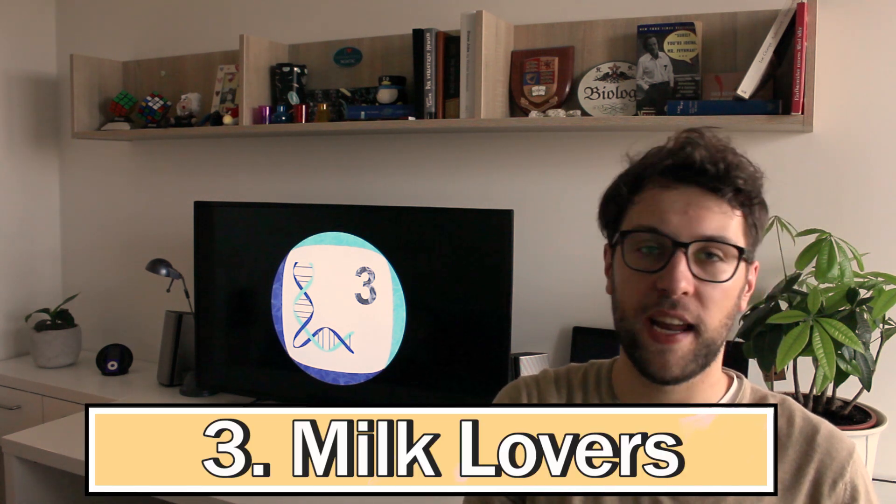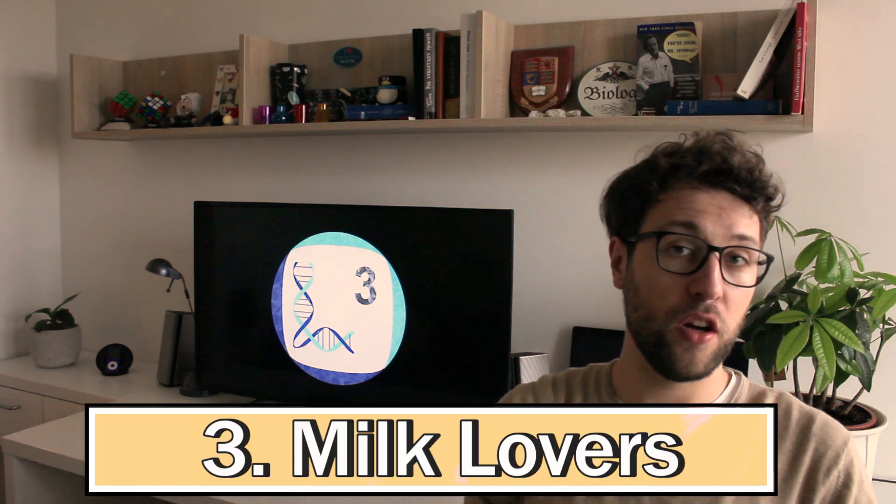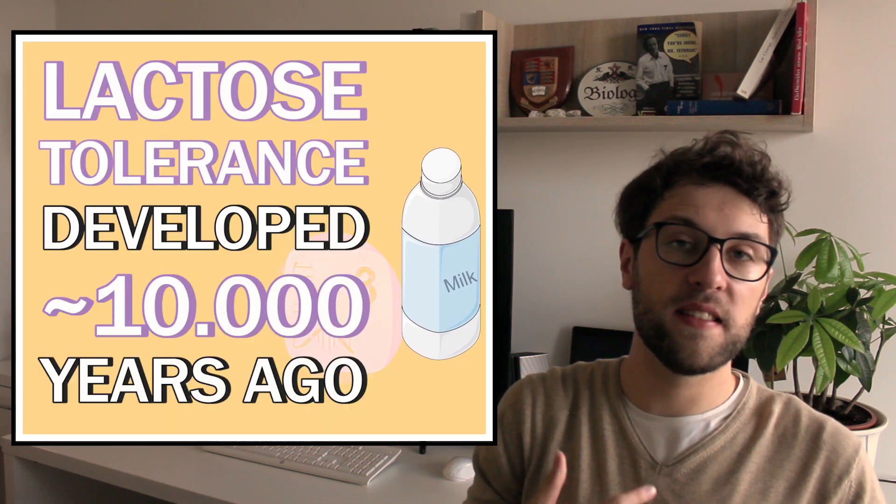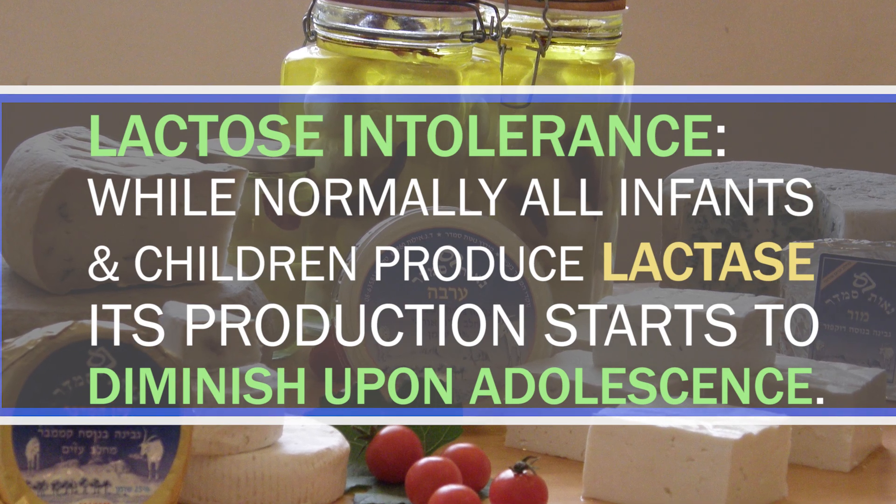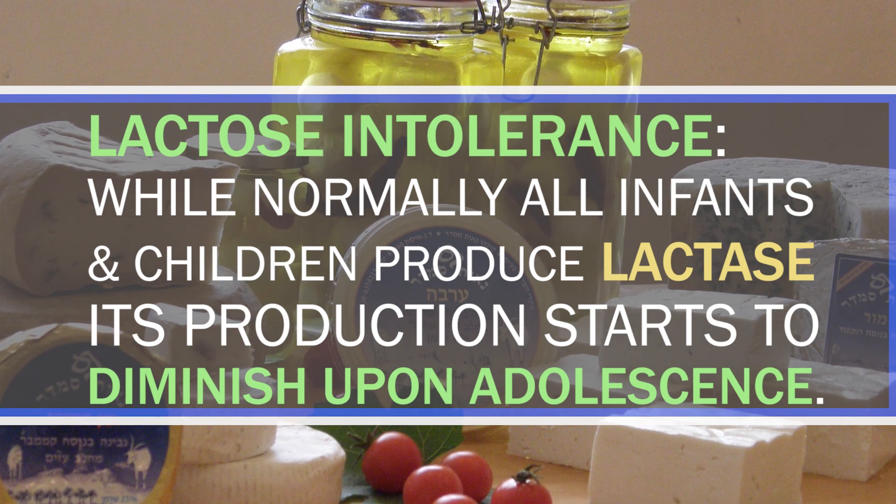Now we come to another group of mutations which we've already covered on this channel. So now we are talking about mutants which are able to drink dairy products. These mutants are lactose tolerant and lactose tolerance developed roughly 10,000 years ago. As the name suggests lactose tolerance involves a protein called lactase. While normally all infants and children produce lactase, its production starts to diminish upon adolescence.